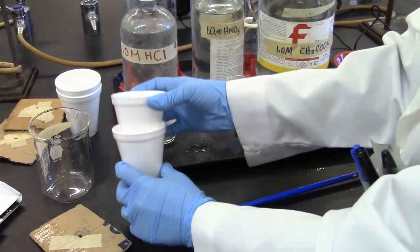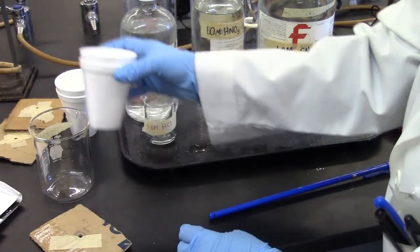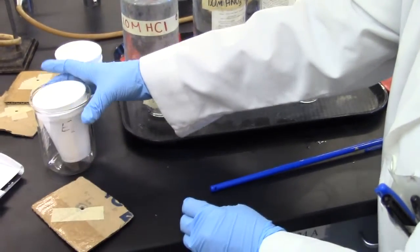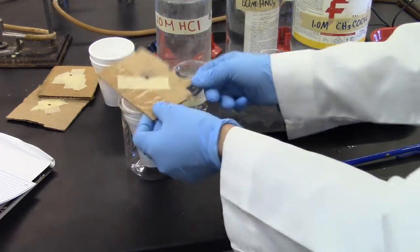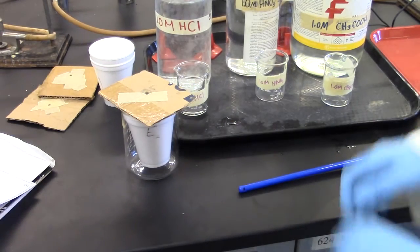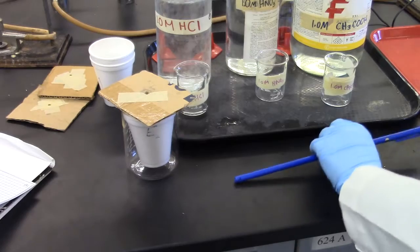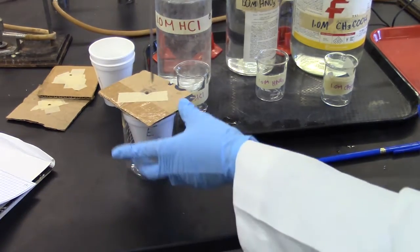The calorimeter consists of two styrofoam cups which will be placed in a beaker for stability and will be covered once the reaction is mixed.